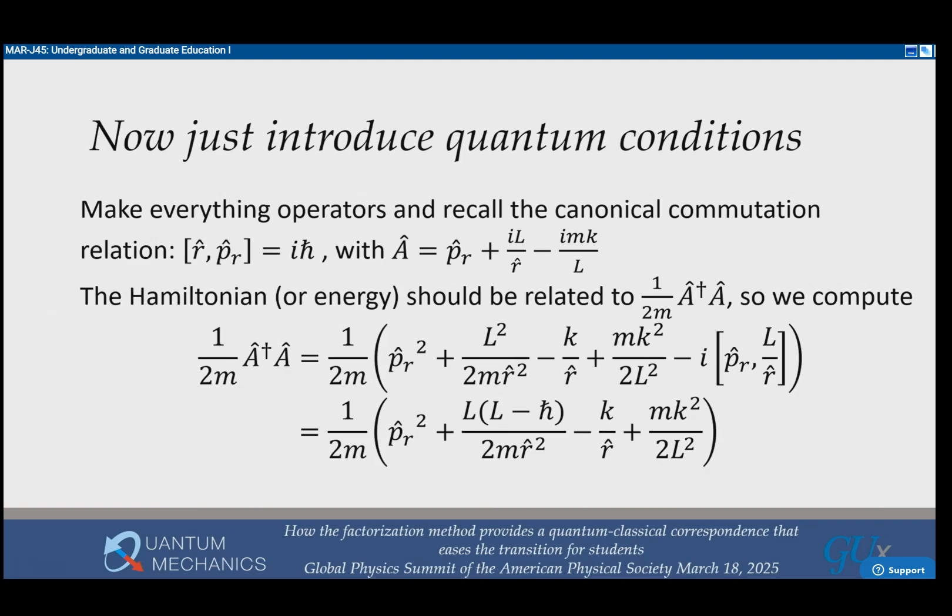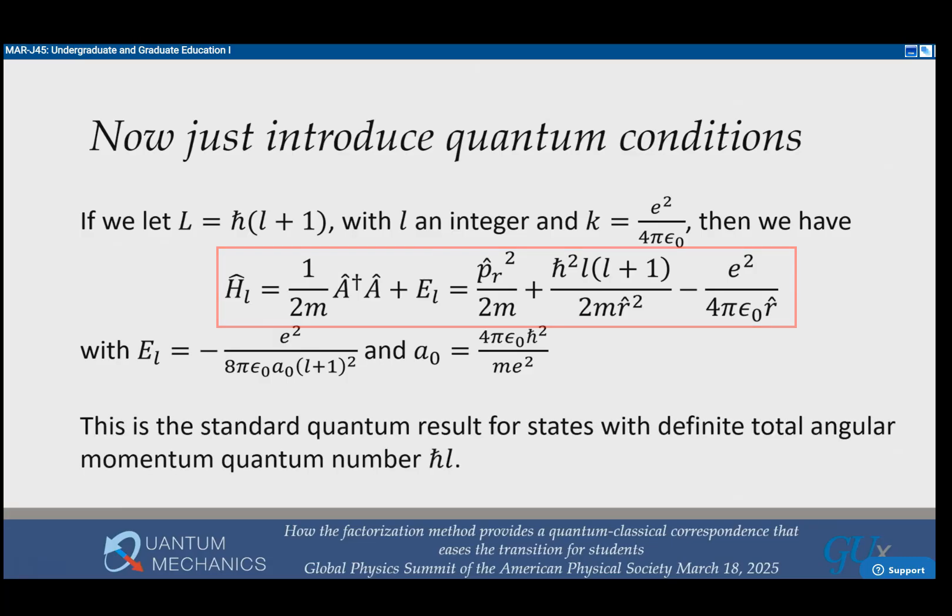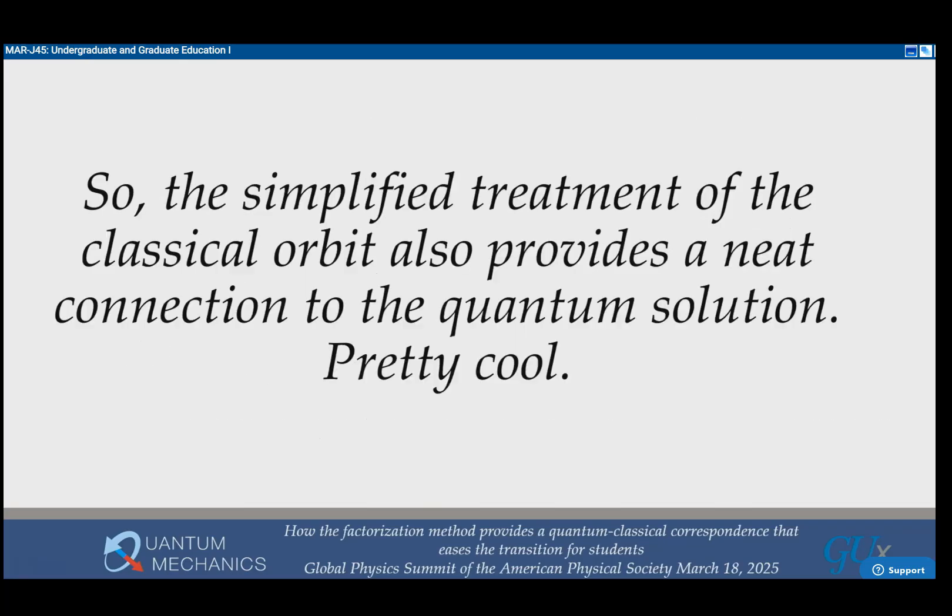When you get that, you will get a term that looks like L times L minus H over 2mR squared. You should recognize this as the Hamiltonian for hydrogen with an extra constant. You move the constant to the other side. If you set the angular momentum to h bar L plus one, you get exactly the Hamiltonian for the Coulomb problem in a fixed angular momentum space. You can then show how that gets solved. This is the standard result as we always see in quantum mechanics.